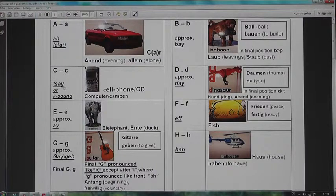C, usually say, sometimes a K sound in foreign words like computer, campen. Otherwise the cell phone sound like CD. D, like the first in dinosaur. Soft D like Daumen, thumb, du, you. The final position D sounds like a T, like in Hund, dog, Abend, evening.